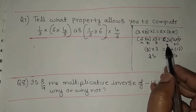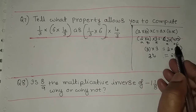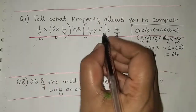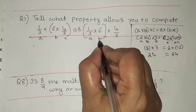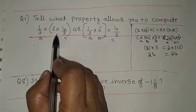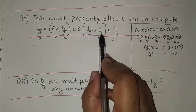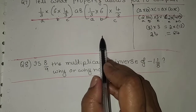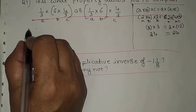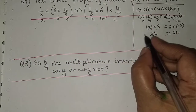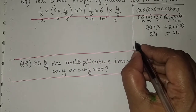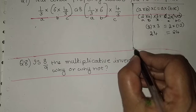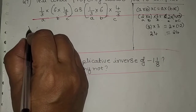So a into b into c equals a into b into c — both cases give 24. Similarly in this problem, the same thing is done with a, b, c: a is outside with b into c inside the bracket in one case, and a into b inside with c outside in the other. Both give the same result. This property is called the associative property.